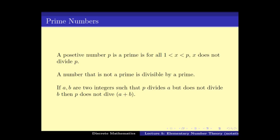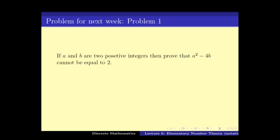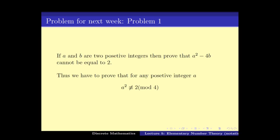I end this video with two problems. Problem 1: if a and b are two positive integers, prove that a squared minus 4b cannot be equal to 2. So irrespective of what a and b are, as long as they are positive integers, a² minus 4b cannot equal 2. In the notation of modulo, we would like to say that the square of any integer a cannot be congruent to 2 mod 4. This should be read as a² minus 2 is not divisible by 4.